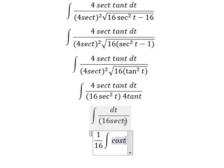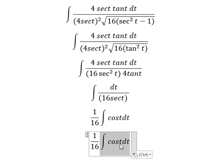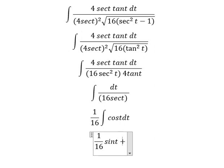One over secant t is cosine t. The integration of this one, we have sine t, and I will add plus c.